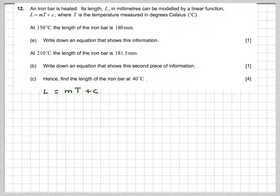We've got L equals mT plus C. We know that L is 180, so 180 equals m times the temperature, which is 150, plus C.